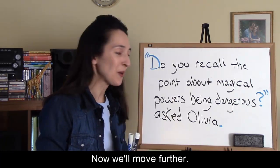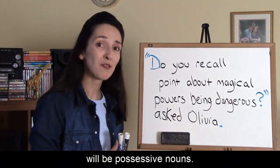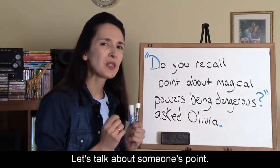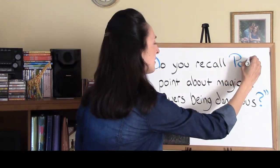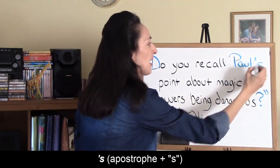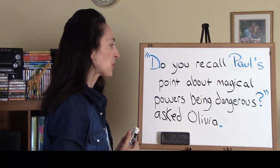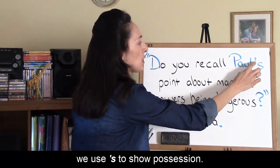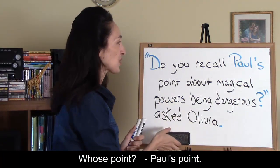Now we'll move further. One of the topics in this lesson will be possessive nouns. Instead of saying 'the point,' let's talk about someone's point. Whose point? How do we show possession? Apostrophe S. 'Do you recall Paul's point about magical powers being dangerous?' asked Olivia. When we have a person's name, we use apostrophe S to show possession. Whose point? Paul's point.